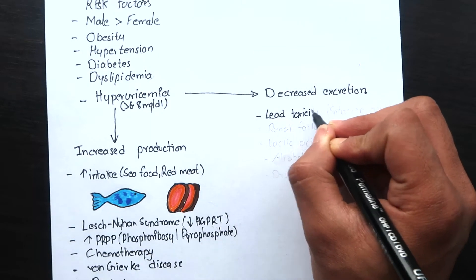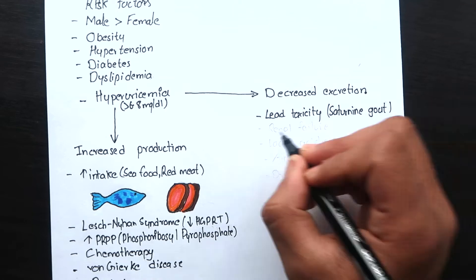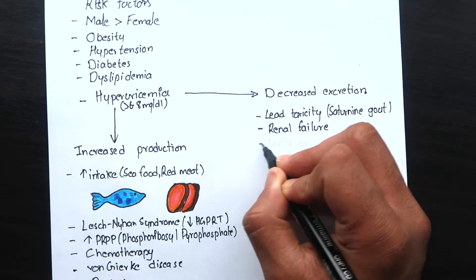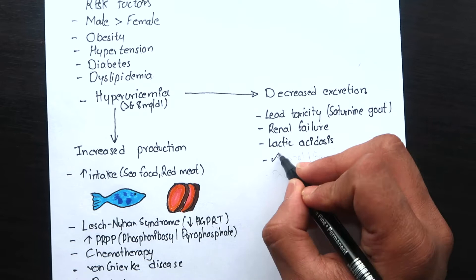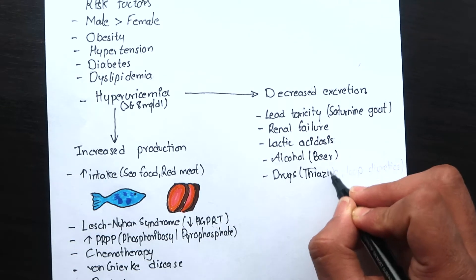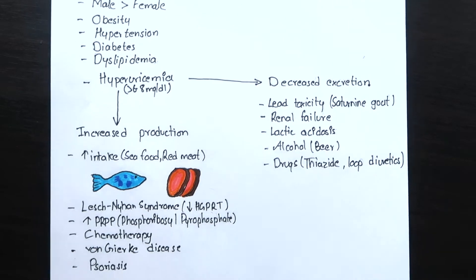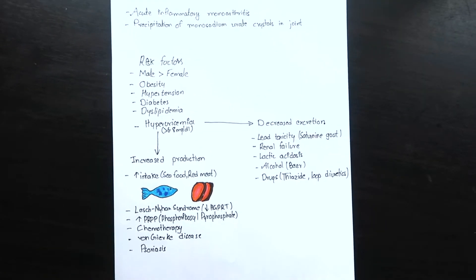Now those that reduce the excretion are lead toxicity which causes what's known as saturnine gout, renal failure, lactic acidosis, alcohol especially beer and drugs such as thiazides and loop diuretics.